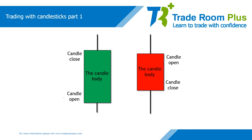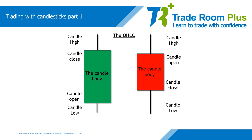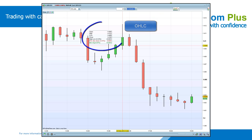The high and low is the same for either bullish or bearish candles. Together with the bodies, we now have the open, high, low, and close. You will often hear and see this referred to as the OHLC. If you hover over a candle on a chart, you will see the OHLC displayed, as well as the time and date of the candle.